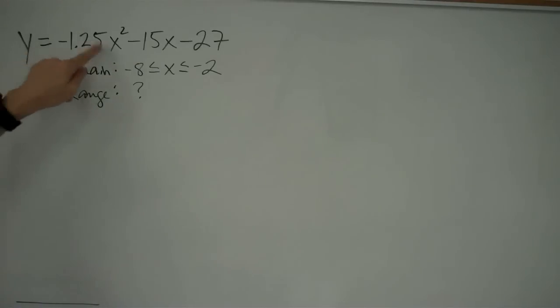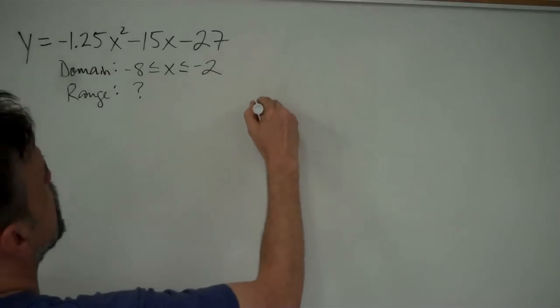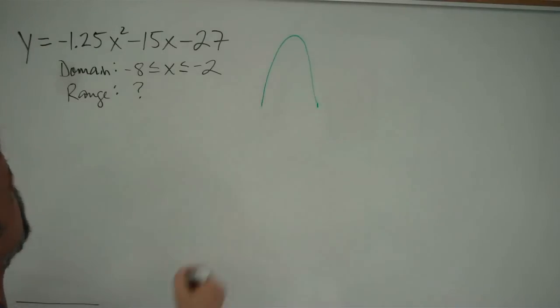And a, that is the number, the coefficient that's multiplied times x squared, is a negative number. And what that tells me is this is going to be an upside down parabola.